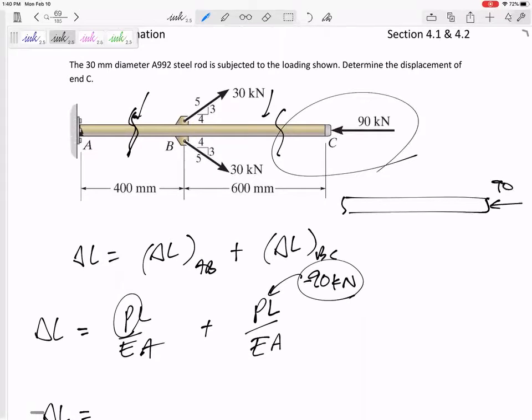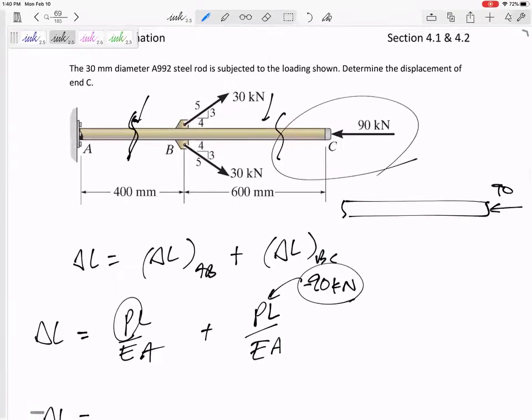I've got 90 kilonewtons that way. I've got 30 and 30, but these are at a 3, 4, 5 angle. I don't think I can just visually see it. So let me call it N for now.